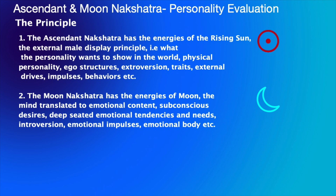The next one is the moon nakshatra, which has the energies of mind as translated to emotional content — the subconscious desires, the deep-seated emotional tendencies and needs, the introversion, the emotional impulses. You can also call it the emotional body. This is the moon, the second luminary. So we are talking both about the display of external and internal, and that is all we are in this polarized world when we come in as souls.